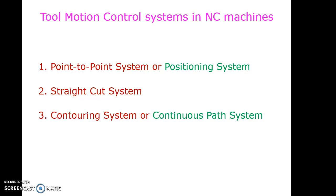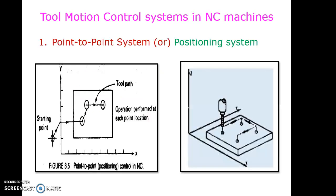The first is the point-to-point system, also called the positioning system. The second is the straight cut system, and the third is the contouring system, also called the continuous path system. Let us discuss each one.